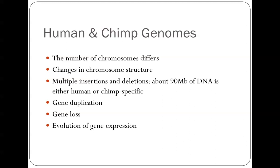What differences do we see? There are differences in the number of chromosomes between humans and chimps, changes in chromosome structure, lots of insertions and deletions — about 90 megabase pairs of DNA which is either human- or chimp-specific in that comparison. We see genes getting duplicated, genes getting lost, and probably the most crucial thing that will be hardest to tease out: differences in the levels of gene expression in the two different lineages.